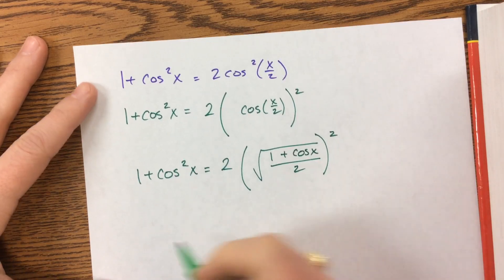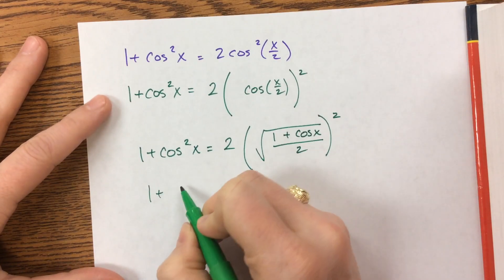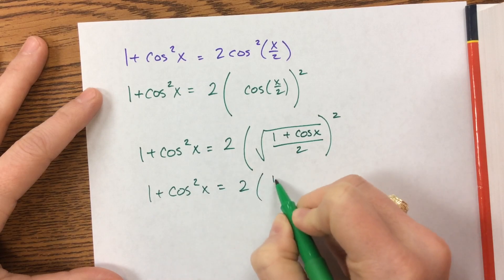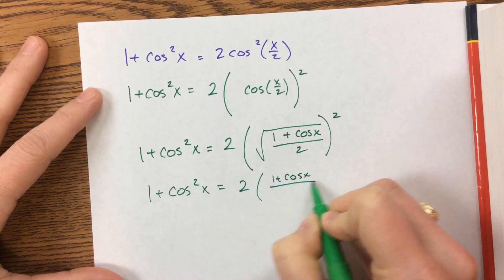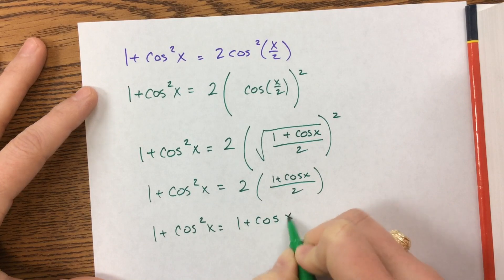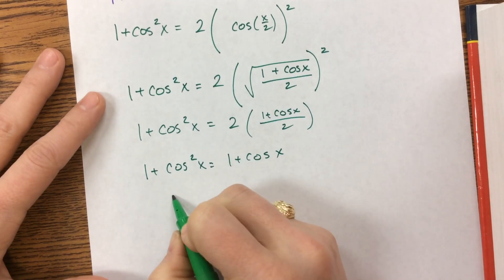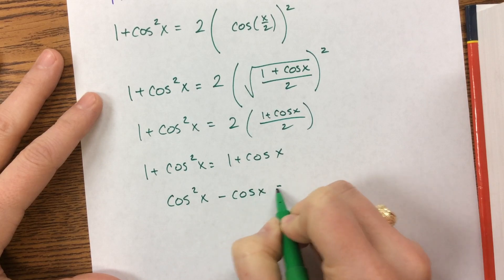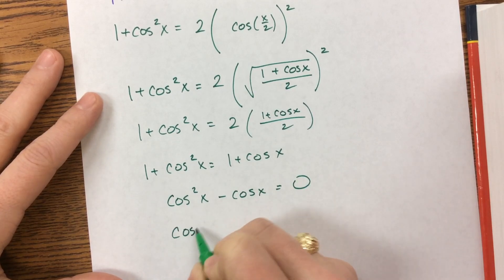This looks something like that. Well, notice the square and the square root cancel each other out. The 2s cancel each other out. The 1s cancel each other out. We are on a roll. Move that over.